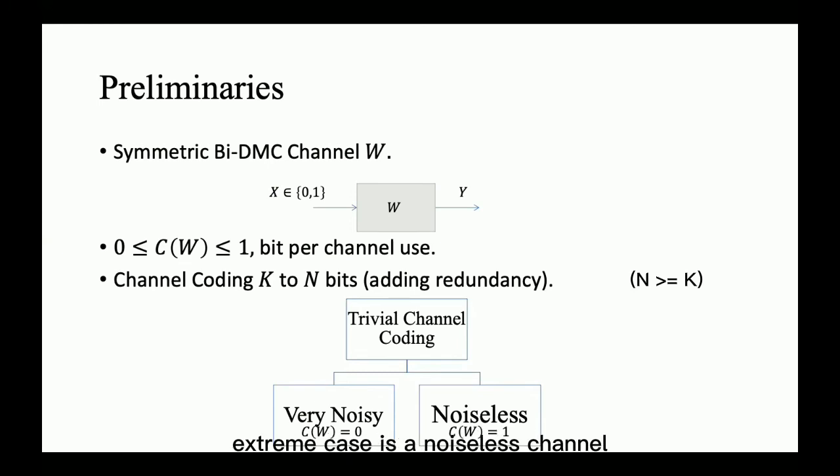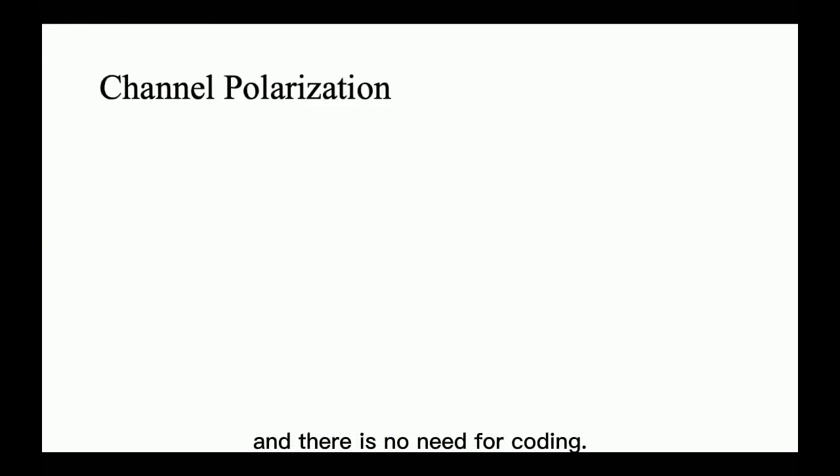And the other extreme case is a noiseless channel with a capacity of 1, so that this channel is perfect and there is no need for coding.